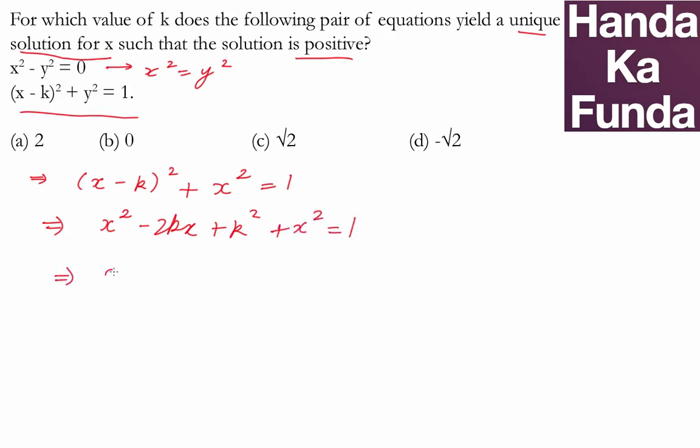Or, this reduces to the quadratic 2x² - 2kx + k² - 1. This is equal to 0.